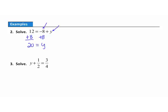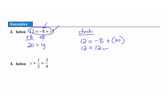Now let's check to make sure that solution was correct by plugging 20 back into the original equation. I have 12 equals negative 8 plus an open set of parentheses, with 20 substituted in. Simplifying the right side: negative 8 plus positive 20 gives me positive 12. The left side stays 12. We put a check mark — the solution of 20 was correct.